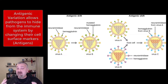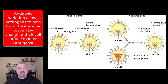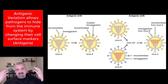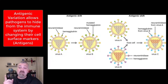Antigenic variation is how organisms change their antigens — change their cell surface markers so they no longer look like that wanted poster. So if I robbed a bank, I'd shave my goatee, get rid of my gray hair, change my clothes, et cetera. So this is antigenic variation.